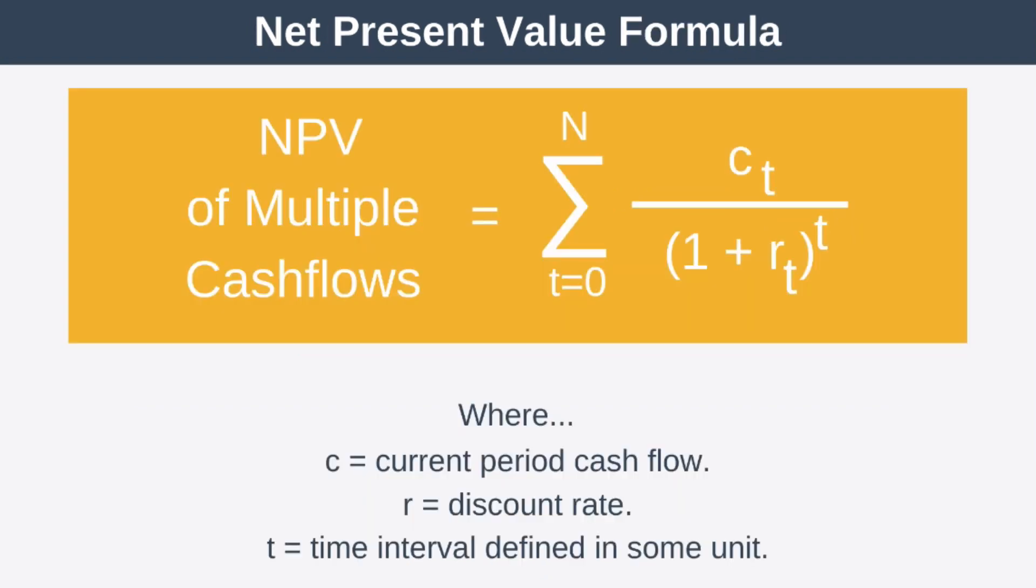Now up until this point, the present value equation we've looked at shows how to calculate the present value of a single cash flow. And for our example what we did is we used that equation multiple times to calculate our net present value. And the equation you can see here on the screen is just a mathematical representation of performing a present value calculation multiple times. So all this equation is saying is from time period zero until you run out of time periods, perform this calculation. Now note that this t here next to the r in the equation means that it's possible, if you want, to have different discount rates for each time period.